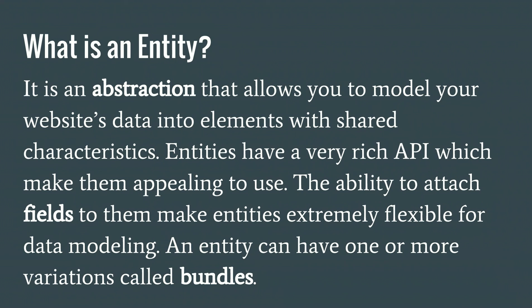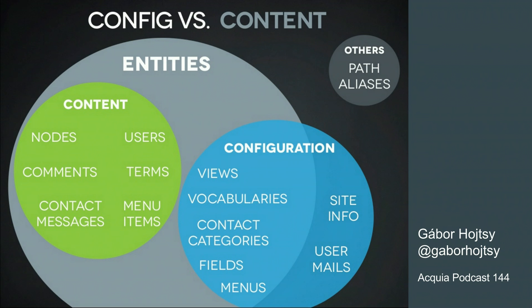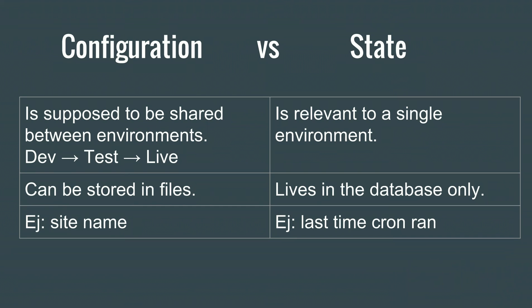This is a little more abstract: entities. We have nodes, content types, and then entities. We have content entities and configuration entities. Nodes, users, taxonomy terms, comments, and views are all entities. The reason we can attach fields to nodes, users, terms, and comments is because these are entities, and entities are fieldable. Files are not fieldable by default, but nodes, users, comments, and terms are — and you can attach fields to them, and everything I described about fields is provided by the entity system.